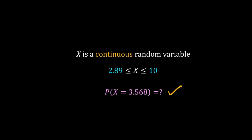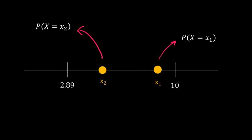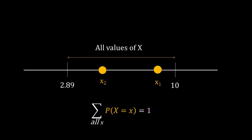Let me try to answer this question. I will use the number line. X lies between 2.89 and 10. X1 is a particular value of X and the probability of X equal to X1 is P(X=X1). X2 is another value of X and the probability that X equals X2 is P(X=X2). In this way I calculate the probability of all values of X in this range.